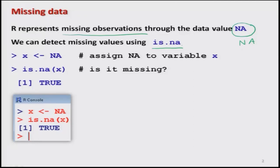Just for the sake of illustration, we take one variable x and intentionally assign it the value NA. NA is a special value given only to denote that the value is missing and not available. Now I operate the command is.na(x). This means I want to know: is there any value missing in x? The answer comes back as TRUE — meaning yes, there is a missing value in x.